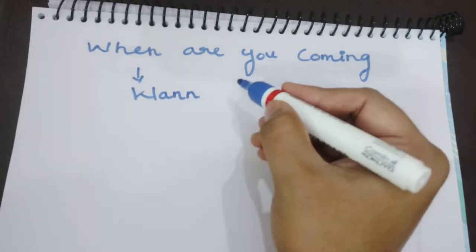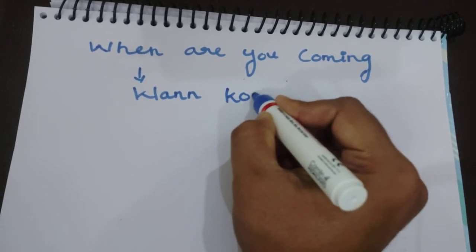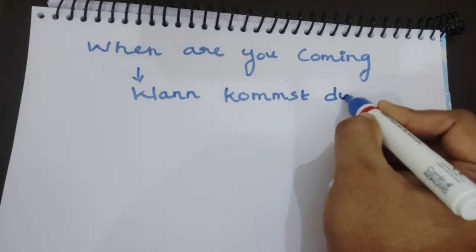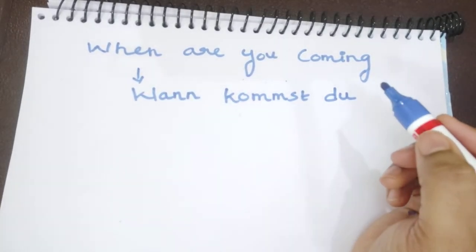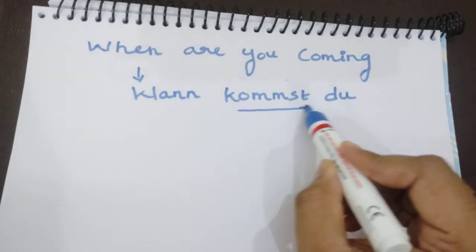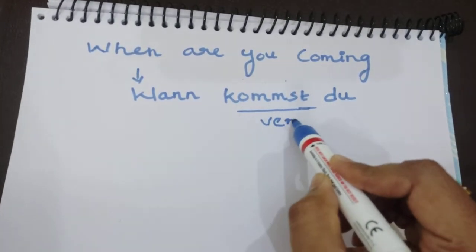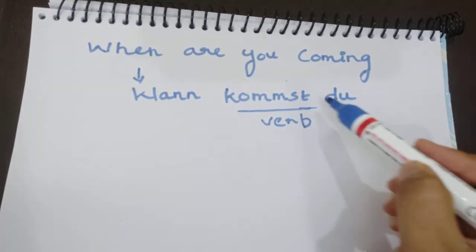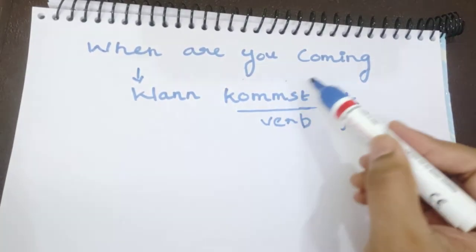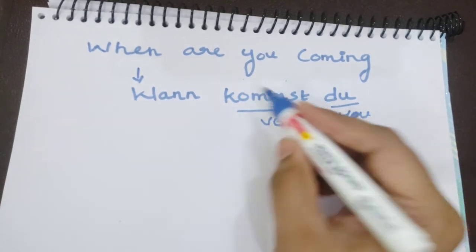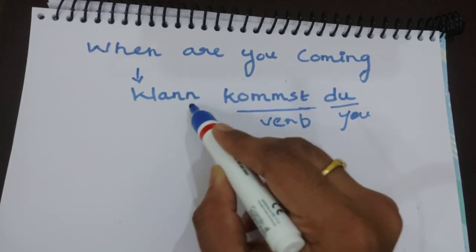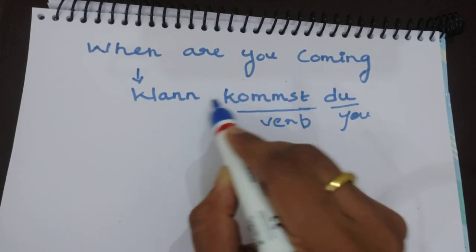Next sentence — 'When are you coming?' — so the German constant here: as you know, the verb is key. 'Coming, coming' — another form is 'coming.' In German: 'Wann kommst du?' — when are you coming?